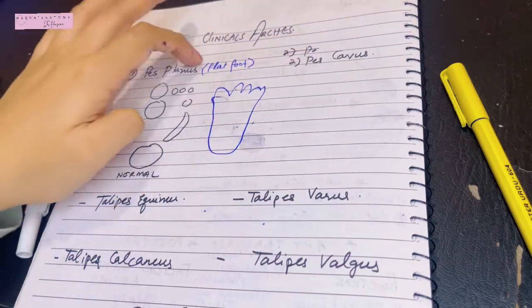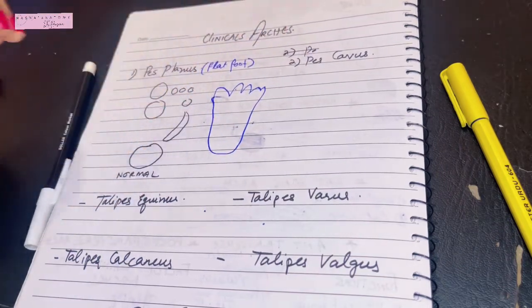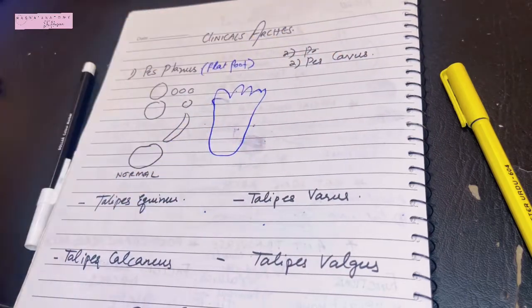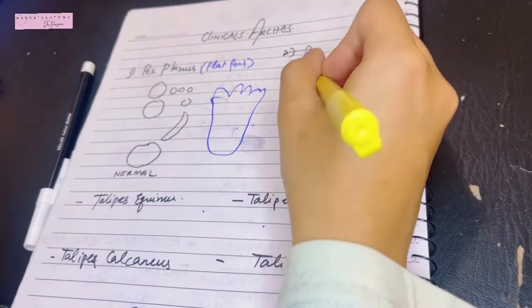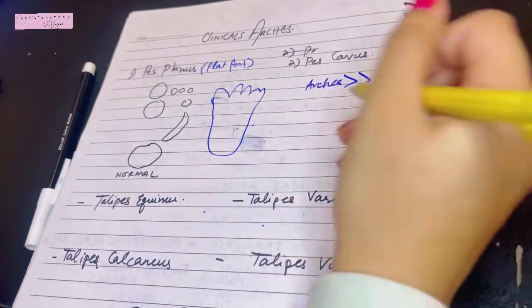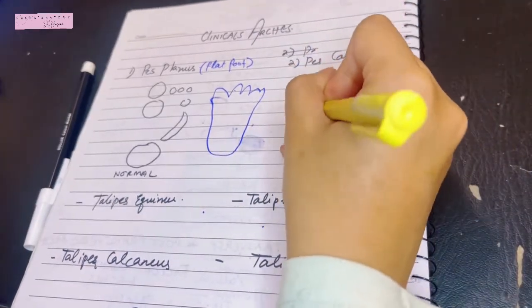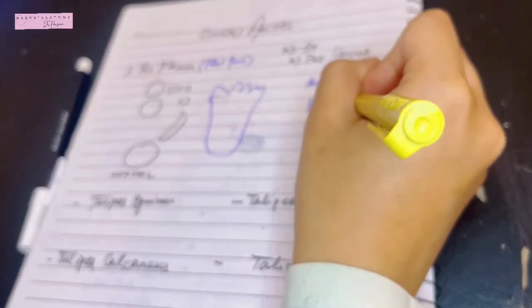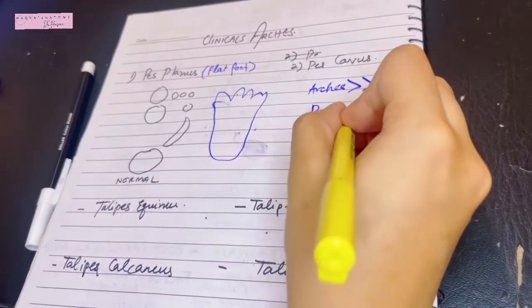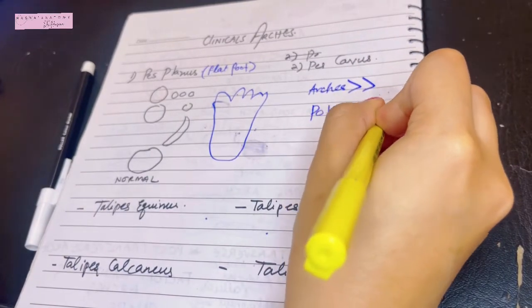Now let's talk about if these arches get exaggerated, what happens. That term is known as pes cavus. In pes cavus, your arches are exaggerated, and when they're exaggerated they usually occur due to a contracture of a muscle from above that is causing the summit to be raised even more. So this occurs in the case of poliomyelitis or it can also occur in spina bifida.